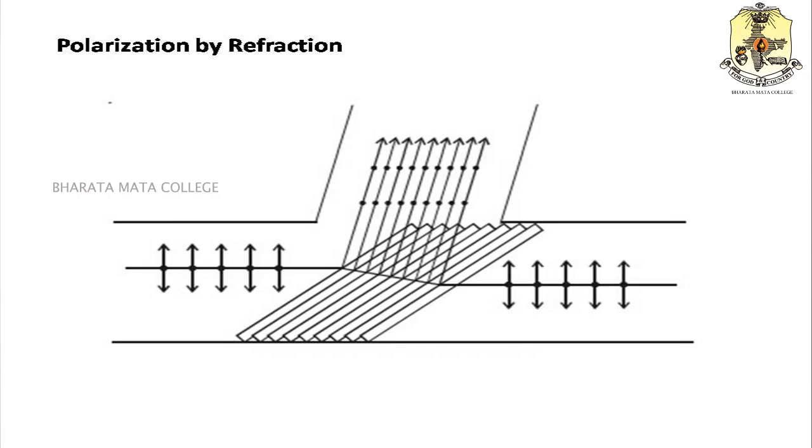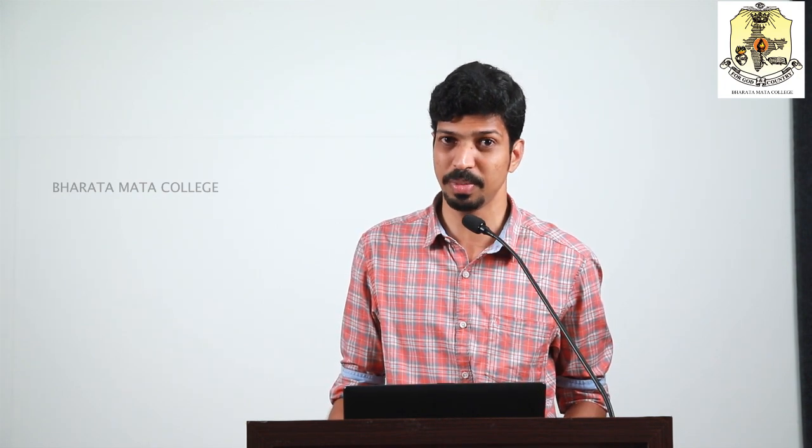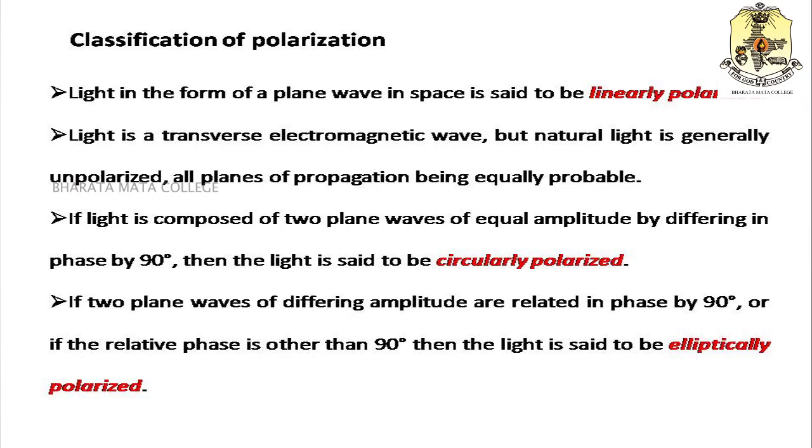Now, what are the different types of polarization? We have already seen plane polarized light. Other types include circularly polarized light and elliptically polarized light. Plane polarized light is a plane electromagnetic wave where the vibration is confined to one plane of vibration. Plane polarized light can be produced by refraction or reflection.